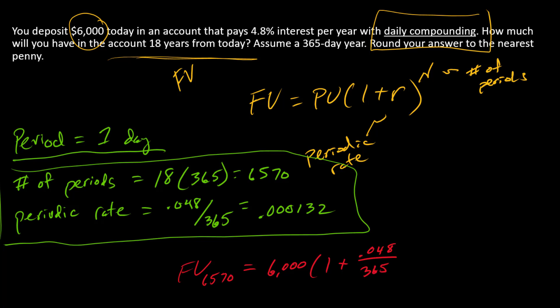And just to avoid errors from rounding, I'm going to write it like this: 0.048 divided by 365, and I'll enter it into my calculator exactly like that so that the unrounded number will go into my calculations. And then I'm going to raise this to the 6,570 power.